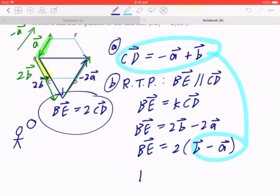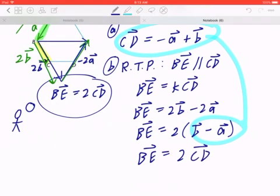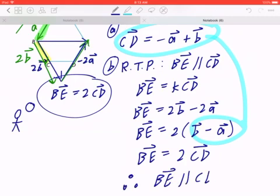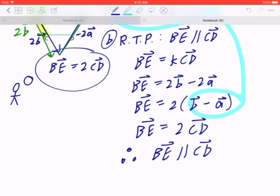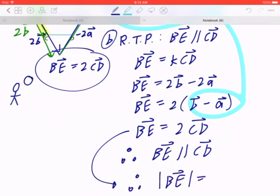So now, BE equals to 2 times CD. And since BE is a scalar multiple of CD, therefore, BE is parallel to CD. And since BE equals to 2CD, this also shows that, therefore, the magnitude of BE equals to 2 times the magnitude of CD.